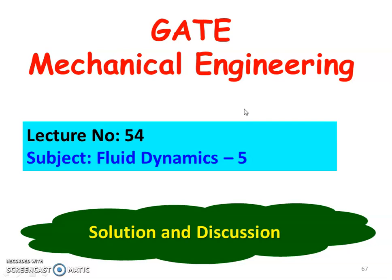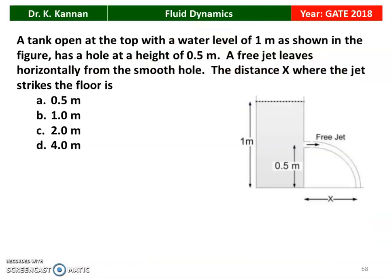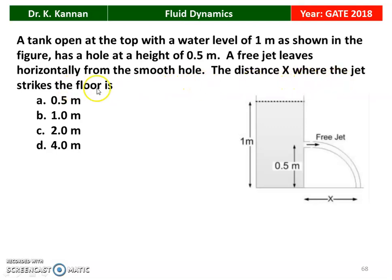In the earlier lecture, we solved a few questions in Fluid Dynamics. We continue with Fluid Dynamics. This is a question from the 2018 Question Paper. A tank open at the top with the water level 1 meter, as shown in the figure, has a hole at a height of 0.5 meter. A free jet leaves horizontally from the smooth hole.